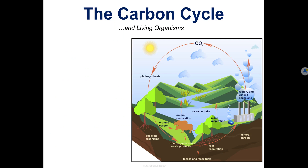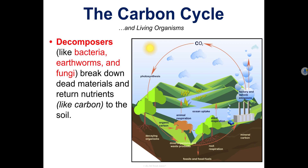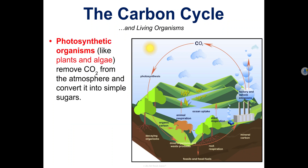There are a couple of very important living organisms that play a role in the carbon cycle. One of them is decomposers — these are things like bacteria, earthworms, and fungi. They break down dead materials and return nutrients like carbon to the soil. There are also photosynthetic organisms, like plants and algae, and they play an important role in driving the carbon cycle.